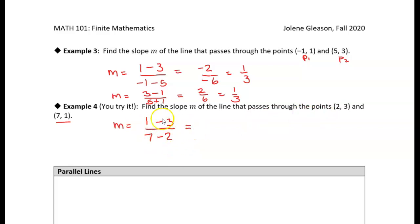So I get one minus three is a negative two, seven minus two is five, so my slope is negative two-fifths. All right, I'll meet you in the next video.